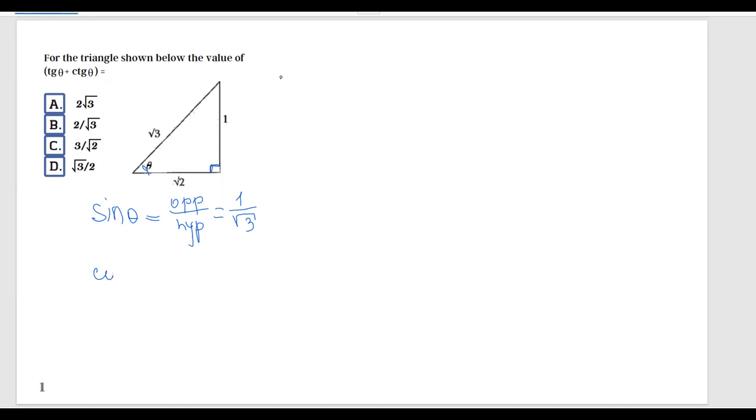Cosine is the adjacent side of the triangle, so it's the adjacent side to the angle theta. So adjacent over hypotenuse, and this is going to be square root of 2 divided by square root of 3.